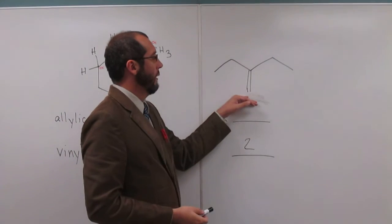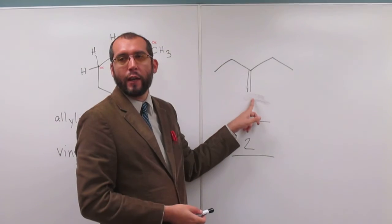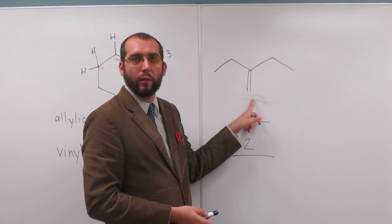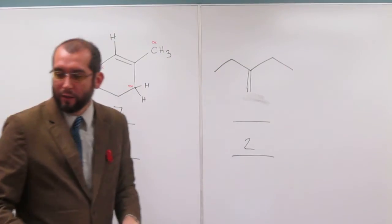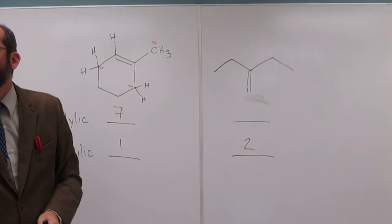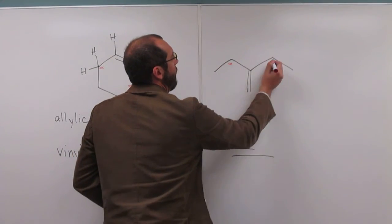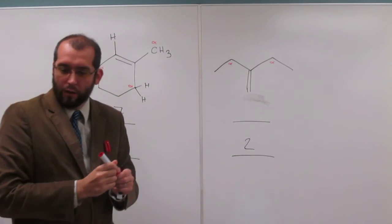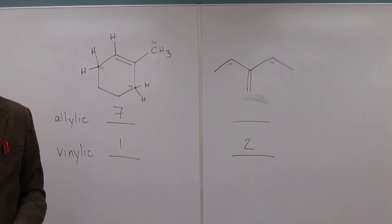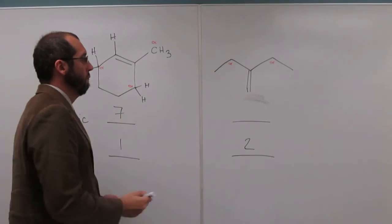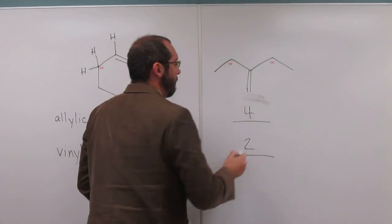And then here, there's no carbons directly attached to this part of the double bond. But up here there are, right? So that means there's two alpha carbons. Is everybody okay with that? So how many allylic hydrogens are there on this one? Four. Four.